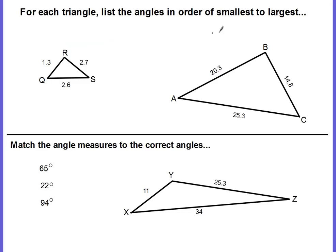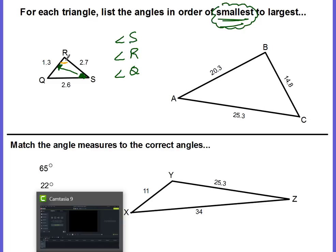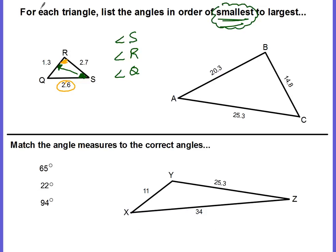Let's do some practice. For each triangle, list the angles in order of smallest to largest. Pause the video and do this one on your own, then come back and check. The smallest angle is angle S, because angle S is opposite the smallest side, which is 1.3. The next smallest would be opposite 2.6, and the angle opposite that side is angle R. The largest side is 2.7, and the angle opposite that would be angle Q. So the order is angle S, angle R, and angle Q.